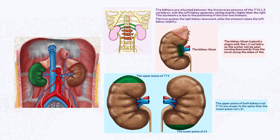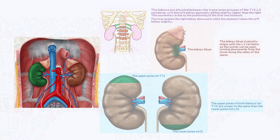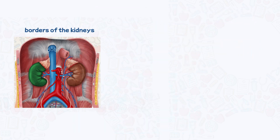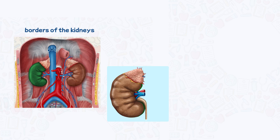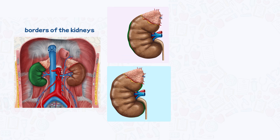Now let's focus on the borders of the kidneys. These bean-shaped organs have two borders: medial and lateral. The lateral border faces outward towards the periphery, while the medial border is oriented towards the midline.